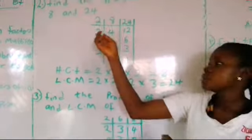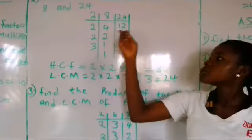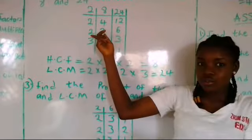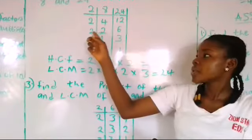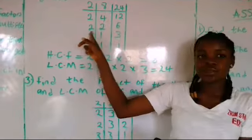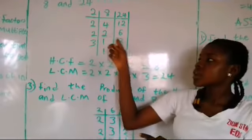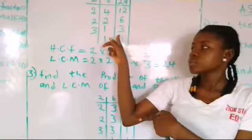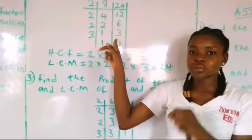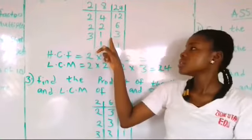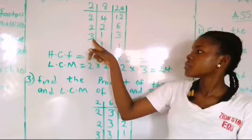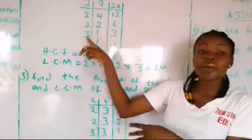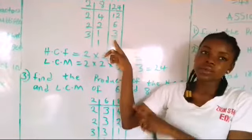We write 2 again: 4 divided by 2 gives you 2, and 12 divided by 2 gives you 6. Write 2 again: 2 divided by 2 gives 1, and 6 divided by 2 gives 3. Now 2 cannot go again because you have 1 and 3, so you have to use 3. Remember, you cannot use a big number before a small number — you must use the small number first. So we write 3: 1 divided by 3 gives 1, and 3 divided by 3 gives 1.